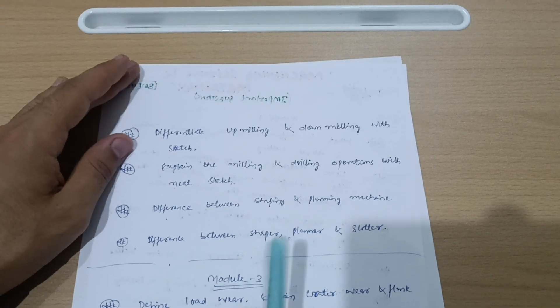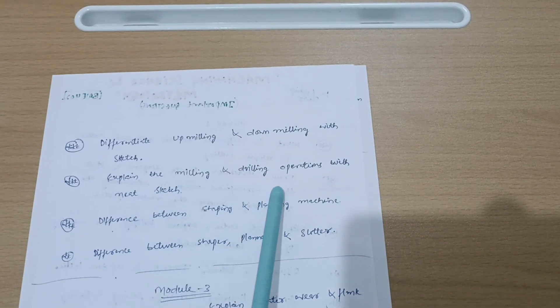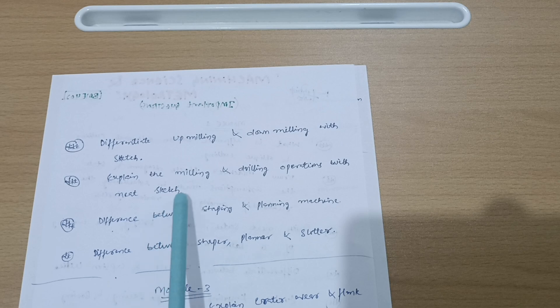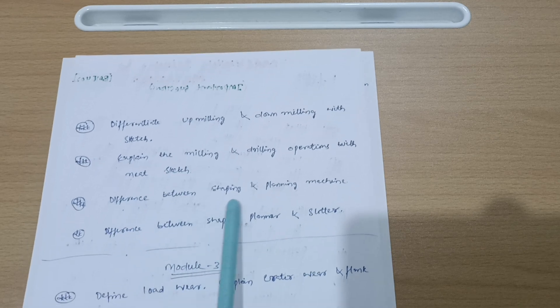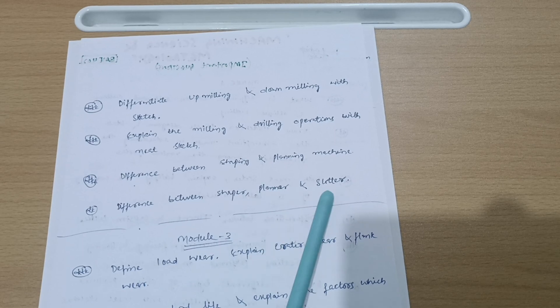Differentiate between up milling and down milling, most important one with sketch. Explain the milling and drilling operations with neat sketch. Next is difference between shaping and planning machine and difference between shaper, planner, and slotter. This is all about Module 2.